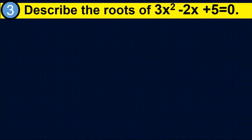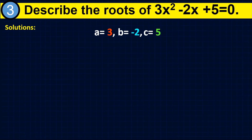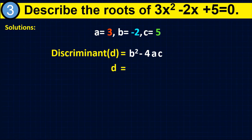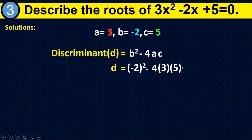Example number 3: describe the roots of 3x squared minus 2x plus 5 equals 0. This is already in general form, so a equals 3, b equals negative 2, and c equals 5. Substituting into b squared minus 4ac: d equals negative 2 squared minus 4 times 3 times 5. Simplifying: negative 2 squared equals 4, and 4 times 3 times 5 equals 60, so we have 4 minus 60, which equals negative 56. Our discriminant is negative 56.